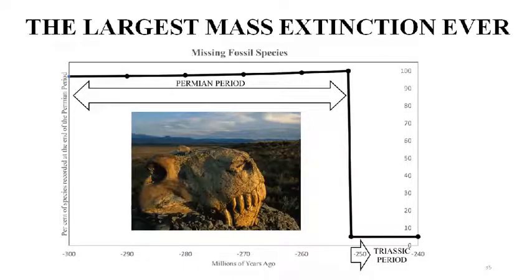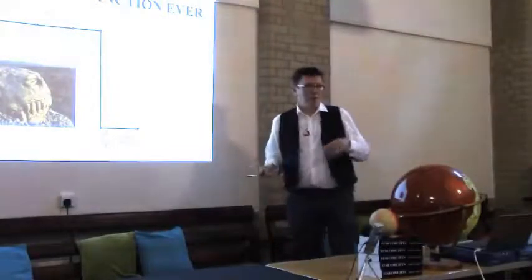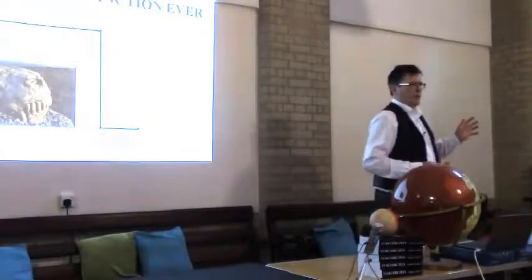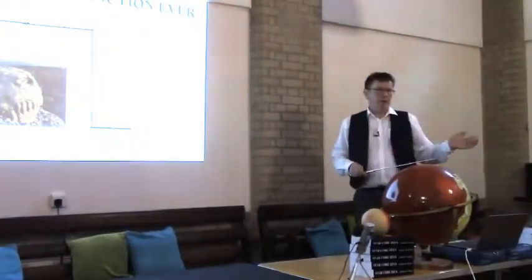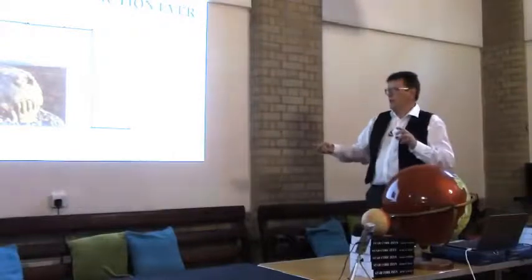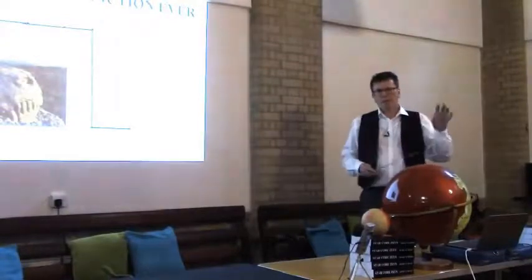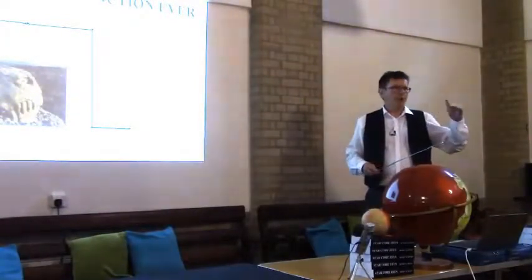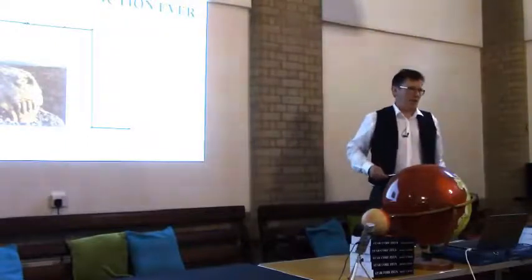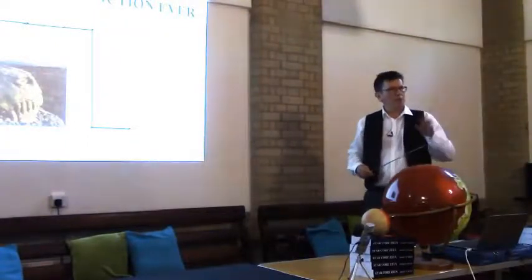Coinciding with all that geological drama, biological diversity just stopped — boom. At the Permian extinction, pretty well everything died. When people think about it, we say 95% of species disappeared, but it's more like 99.9999% of all living things disappeared, and just a few survivors got through to then regenerate life on this planet.